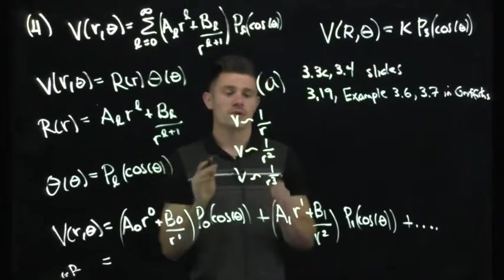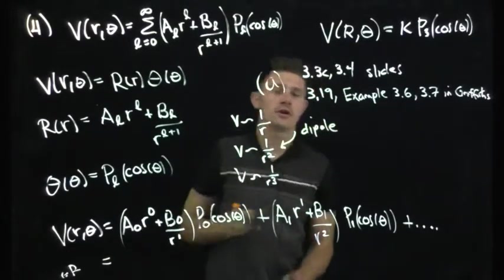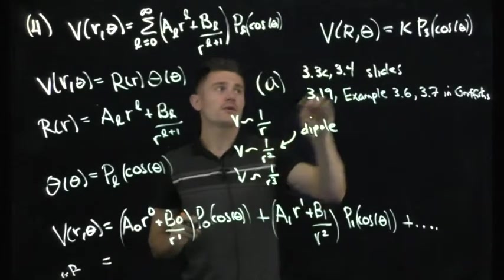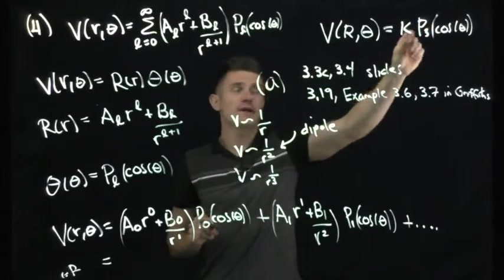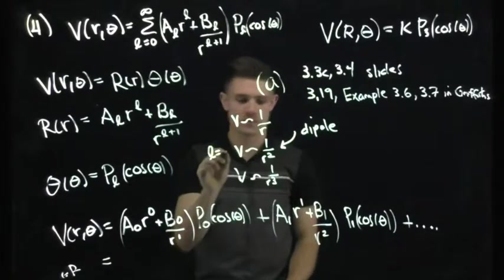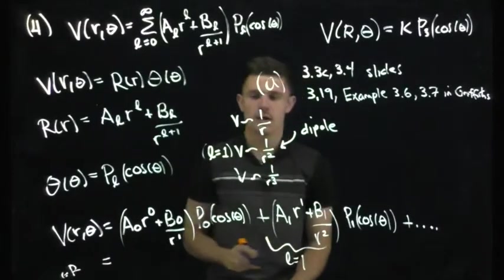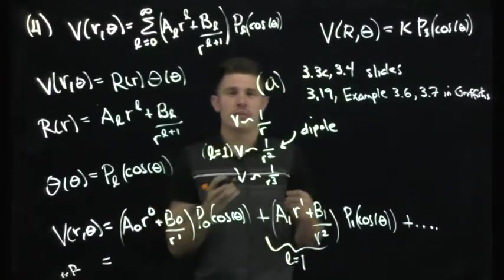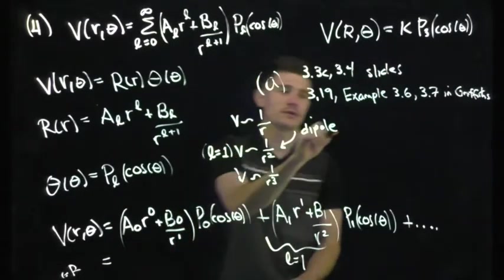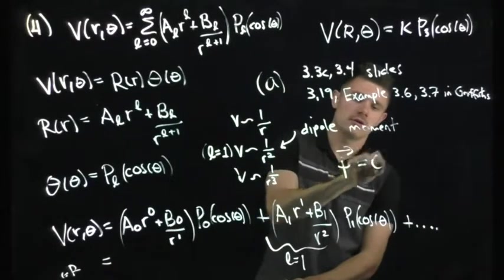We want the dipole moment, so we want the coefficient of the dipole term. However, due to the boundary conditions, we only have the L=3 term. The dipole corresponds to 1/r², which appears when L=1. Since L=1 is not present in our sum — only L=3 is — our dipole moment is equal to 0.